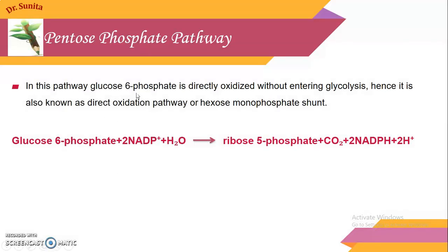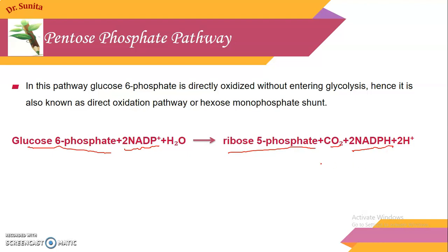In the pentose phosphate pathway, glucose-6-phosphate is directly oxidized without entering glycolysis. That is why it is known as the direct oxidation pathway or hexose monophosphate pathway, in which glucose-6-phosphate reacts with 2 NADP+. The enzyme used here is NADP+ because in anabolic reactions, the coenzyme used is NADP+, not NAD+. This gives rise to ribose-5-phosphate, carbon dioxide, and 2 NADPH.